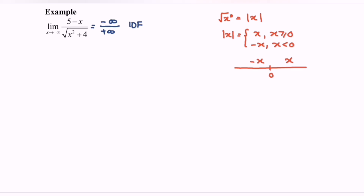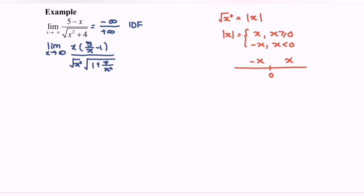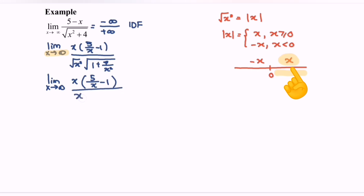The highest power of the denominator is x. Let's factorize: the limit when x approaches positive infinity gives x times (5 over x minus 1) over x times the square root of (1 plus 4 over x squared). Since x is approaching positive infinity — meaning towards the right — the function x is selected for the absolute value.